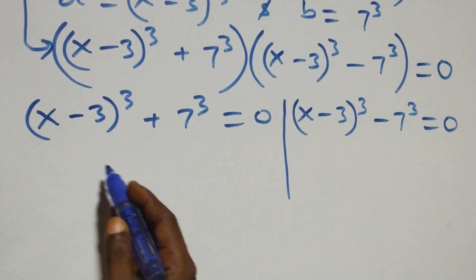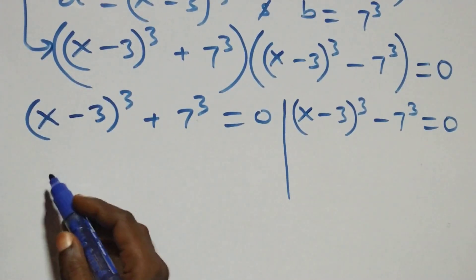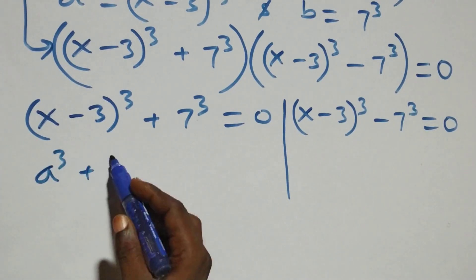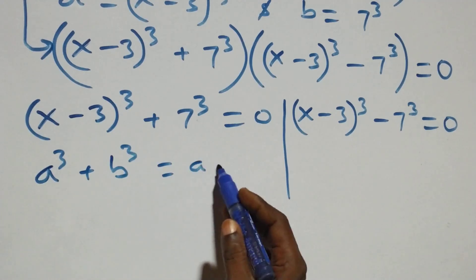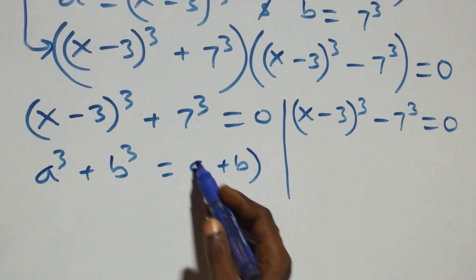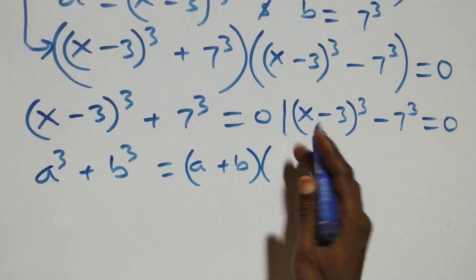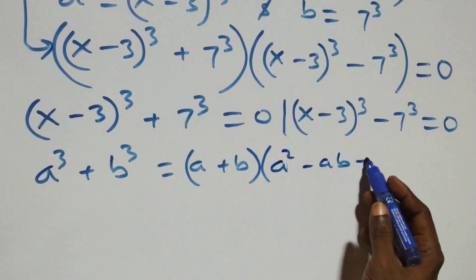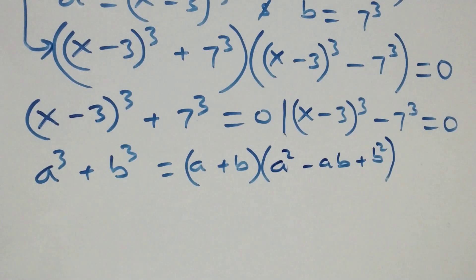Solving the first case, this follows the sum of cubes formula: a^3 plus b^3 equals (a plus b)(a squared minus ab plus b squared).